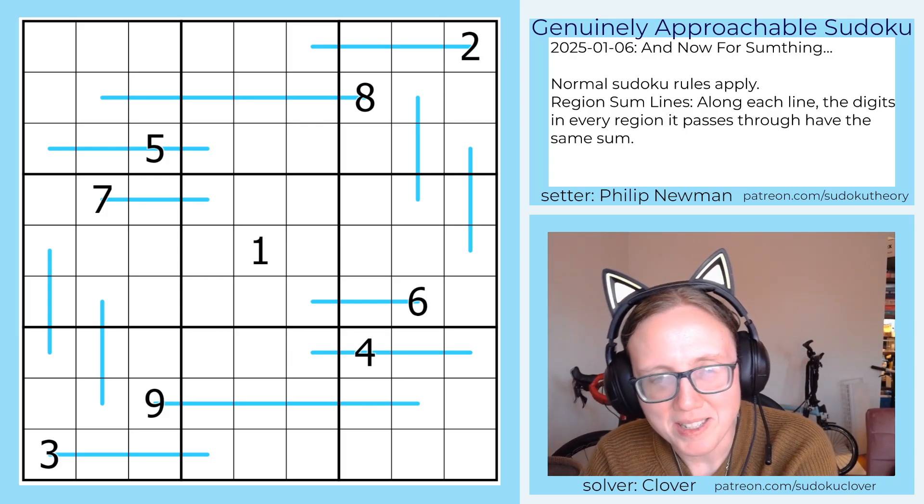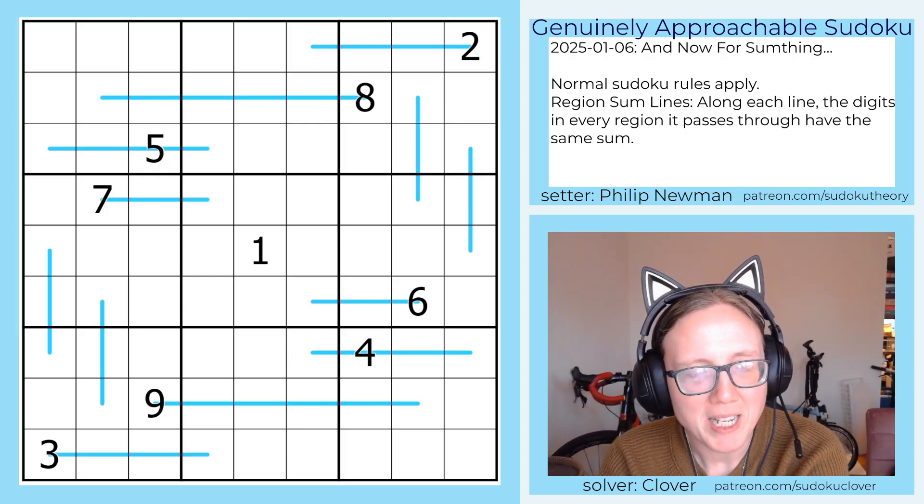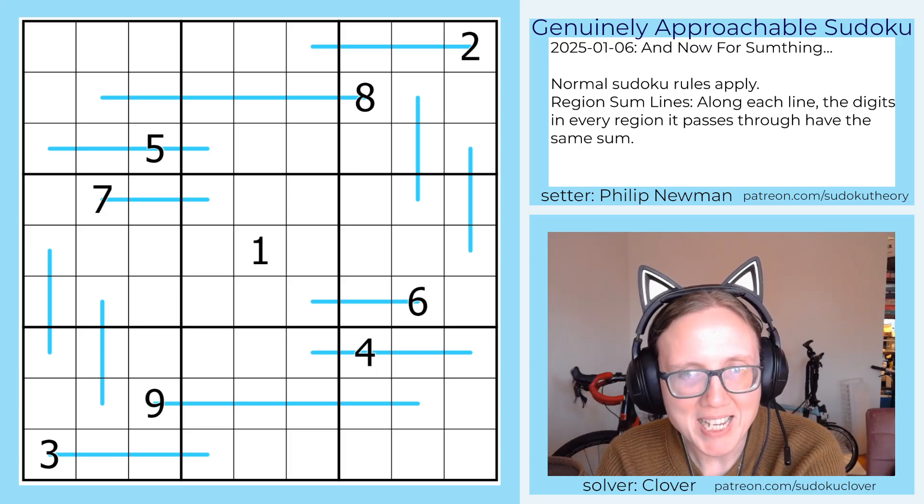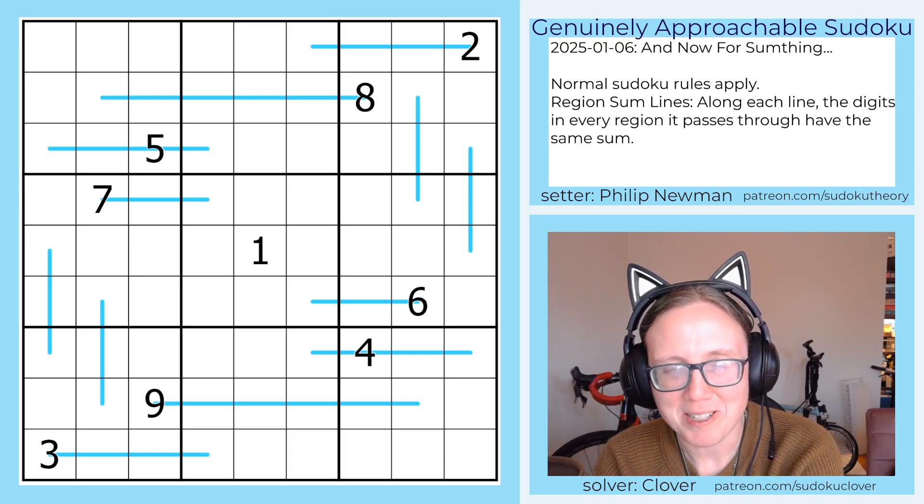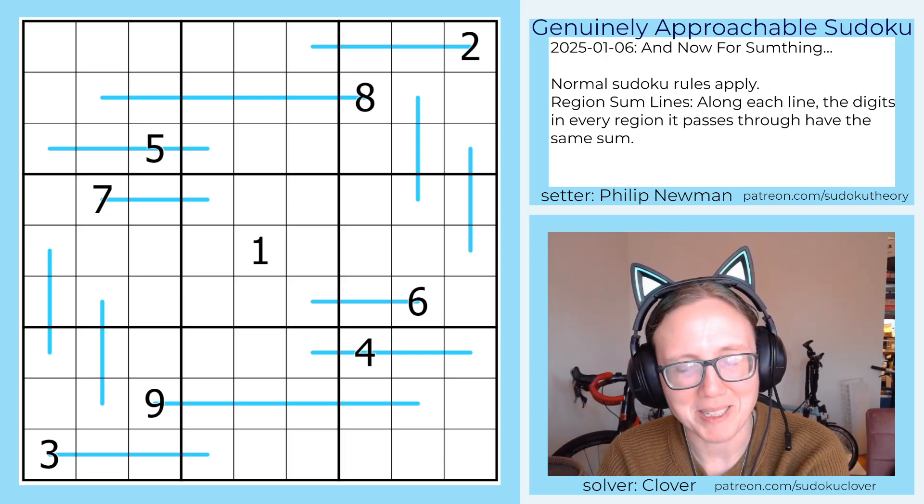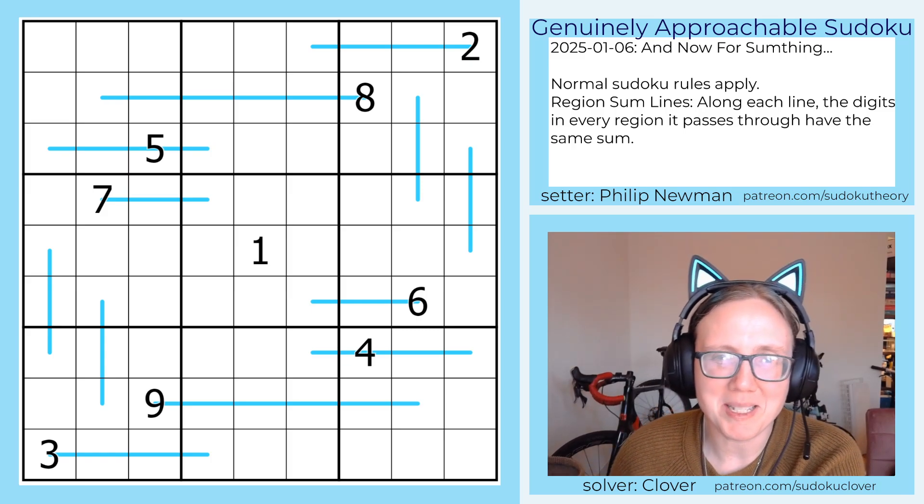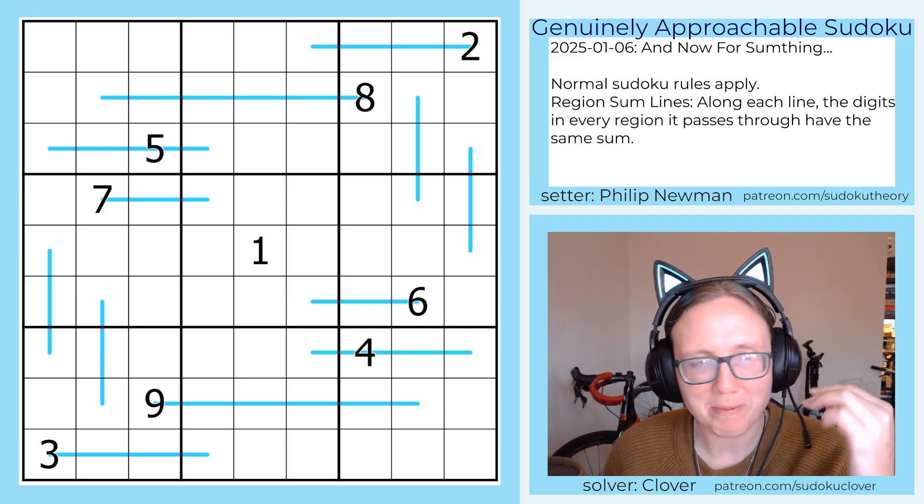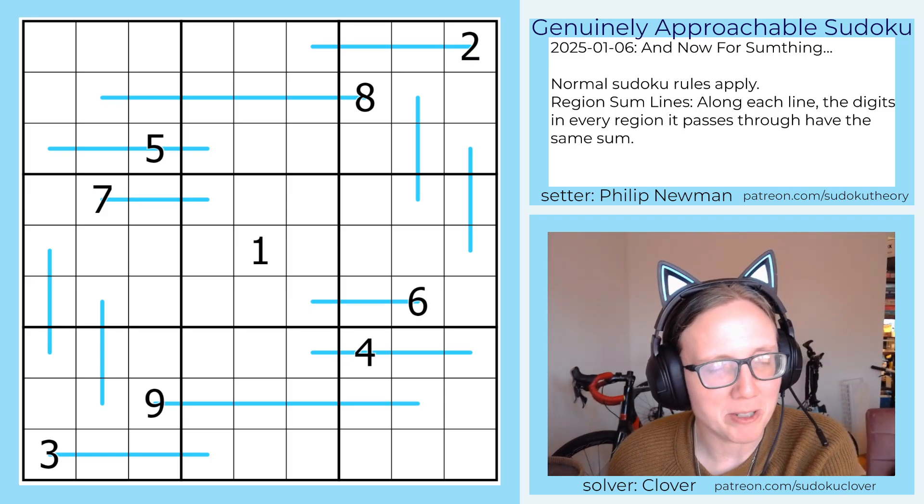Hello my friends, I'm Clover. This is Genuinely Approachable Sudoku, and today we're solving AND NOW FOR SOMETHING, which I assume is short for AND NOW FOR SOMETHING COMPLETELY DIFFERENT by Philip Newman. The sum and something is a pun on region sum lines, which is the variant we're solving today.